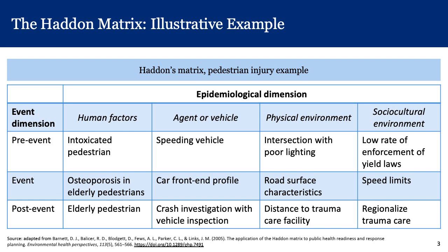The various rows reflect how that agent plays out before, during, and after an event — in other words, pre-event, event, and post-event. The physical environment column reflects the physical infrastructure and how that plays out before, during, and after an injury or illness-causing event. The far right column is the sociocultural environment column, and its cells reflect how the sociocultural environment plays out in pre-event, event, and post-event phases respectively.